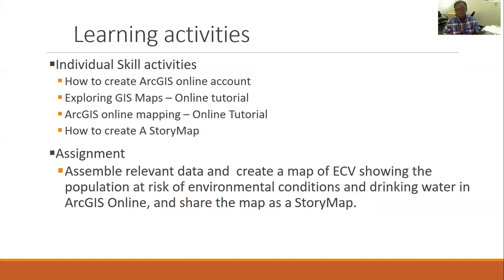The assignment is to assemble relevant data and create a map of East Coachella Valley showing population at risk of environmental conditions and drinking water. Once you create this map, you want to share it as a story map. It is important for you to assemble relevant data. This map will be used for subsequent assignments, so make sure you save it — it will remain on your ArcGIS content menu so you can access it in the future.